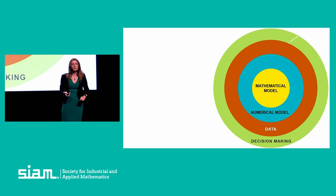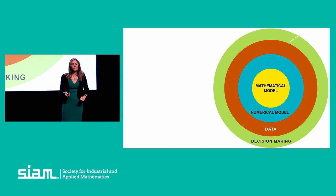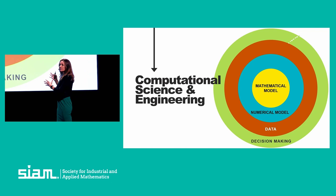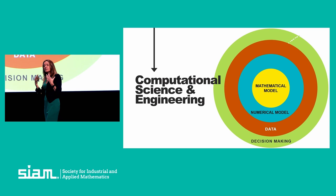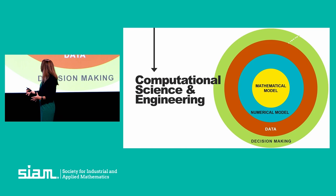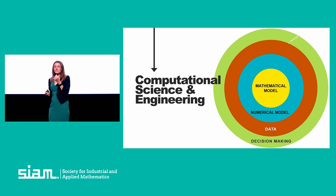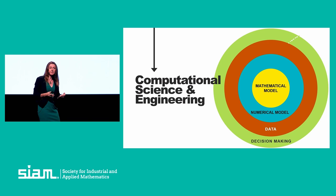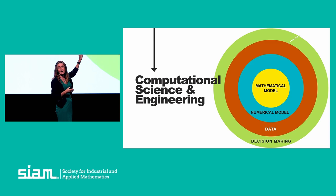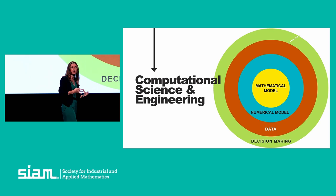We wrap all of that in a loop of decision-making. When we look at all those elements together, this is the field of computational science and engineering — sometimes called CS&E — the field encompassing this SIAM Conference on Computational Science and Engineering. It's important to recognize that computational science is distinct from computer science. Computational science and engineering has at its core the notion of a mathematical model that lets us predict and reason about complex physical and natural systems.